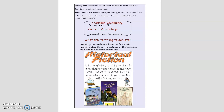Today we're going to move on to do a reading workshop lesson on historical fiction. Our teaching point is: readers of historical fiction pay attention to the setting. We do this by first identifying the setting — time and place — by asking, what clues is the author giving me that suggests what kind of place this is? And by asking, how does the author describe what this place looks like? How do they create a feeling or mood? Our academic vocabulary today will be setting, mood, and plot.